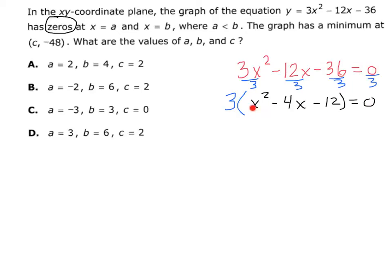Now what's left inside the parentheses is a quadratic equation, x squared minus 4x minus 12. If this factors, it will factor into two what? Two binomials. So let's rewrite this. Three, and then let's write two binomials equals zero.